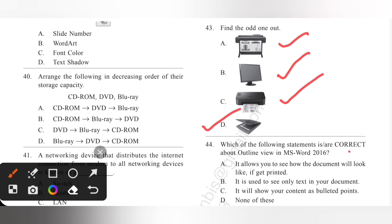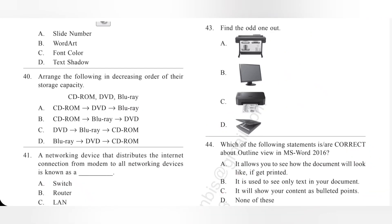Question 44: Which of the following statement are correct about outline view in MS Word 2016? So, we need to select the correct statement. Option A: It allows you to see how the document will look if get printed. No. B: It is used to see only text in your document. No. C: It will show your document as bulleted points. Yes. So, option C is the correct answer.